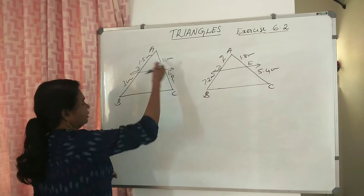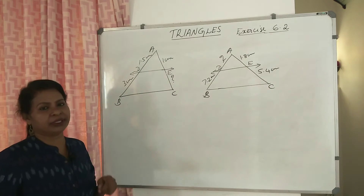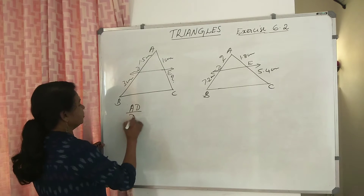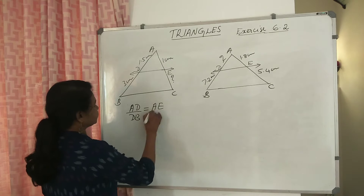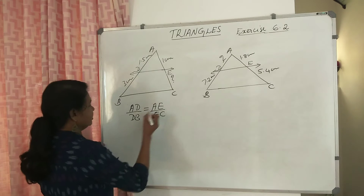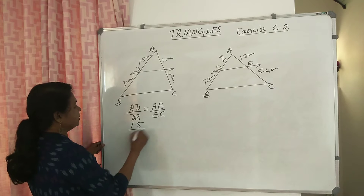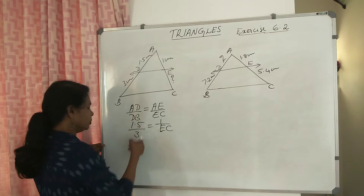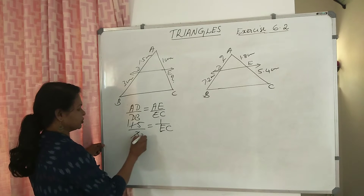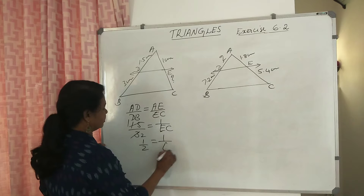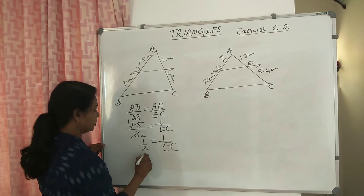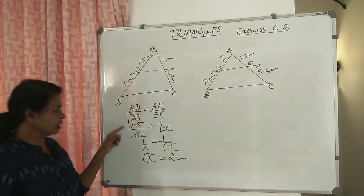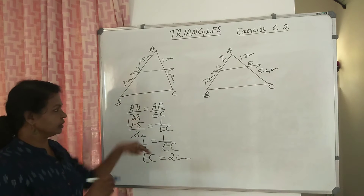We have to find AE. We will solve this question. One mark is possible. By BPT, AD divided by DB is equal to AE divided by EC. Substituting: 1.5 divided by 3 is equal to 1 divided by EC. This simplifies to 1 by 2 equals 1 by EC. Since numerators are equal, therefore EC is equal to 2 cm. If you have an MCQ question, just calculate and answer it.